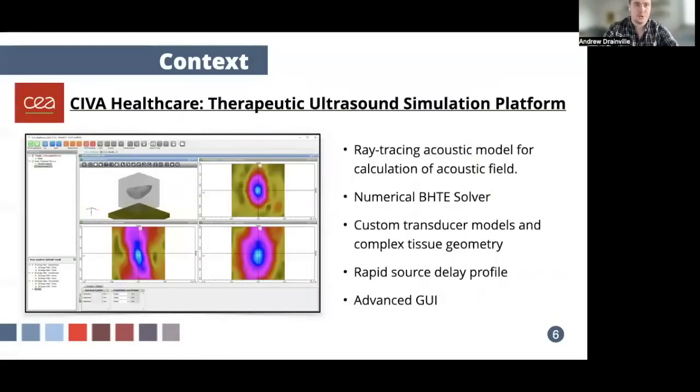To help address these questions, we turn to a simulation platform called Siva Healthcare, which provides ray tracing modeling of ultrasound propagation for the calculation of acoustic fields and tissues, as well as thermal modeling. The software is capable of handling custom transducer models and complex tissue geometries with an advanced GUI that makes the software user-friendly, customizable, and allows for a wide variety of treatment parameters.